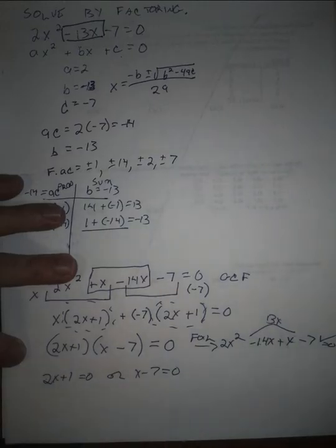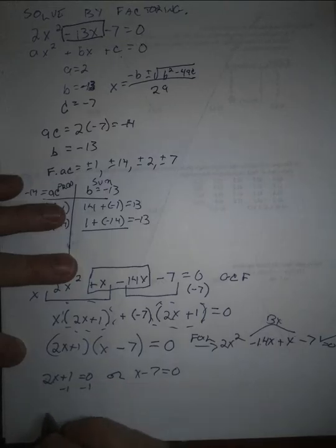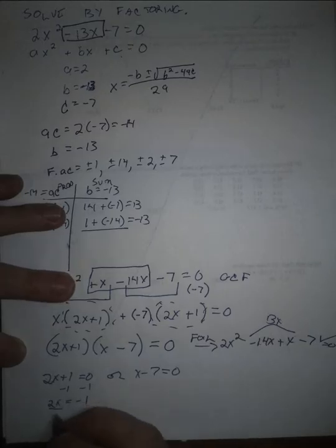And now we solve our two linear equations. This is a two-step equation. We subtract 1 from both sides. I get 2x equals negative 1, and then divide by 2, and I get x is equal to negative 1 half.